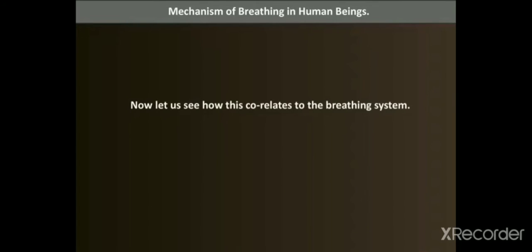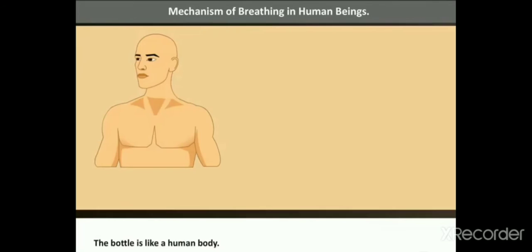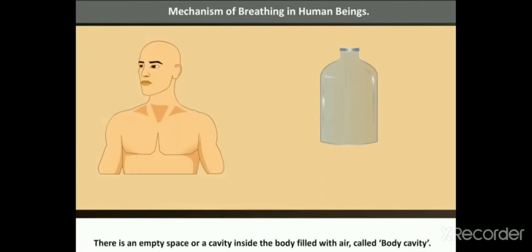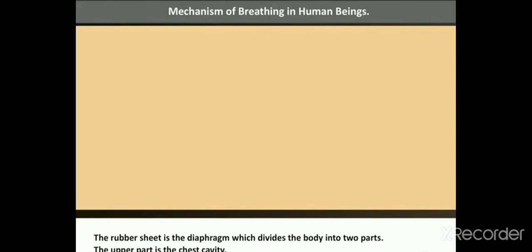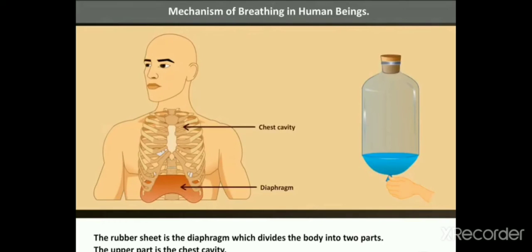Now let us see how this correlates to the breathing system. The bottle is like a human body. There is an empty space or a cavity inside the body filled with air called body cavity. The rubber sheet is the diaphragm which divides the body into two parts. The upper part is the chest cavity.